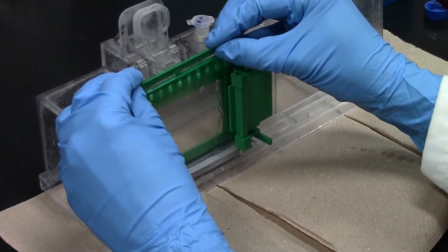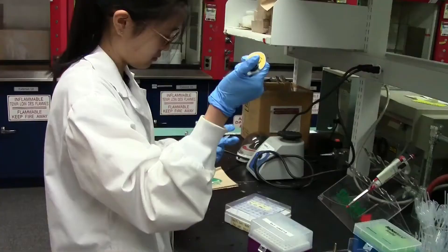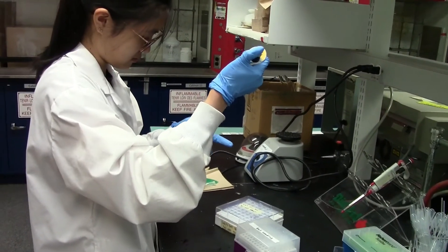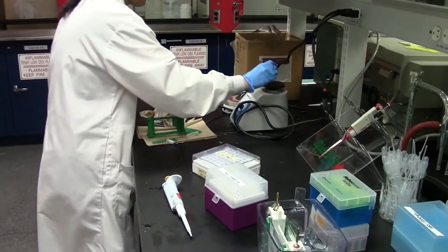While waiting for the gel to polymerize, you can prepare your oligonucleotide samples. 0.1 ODs are ideal for a small gel. Add 10 microliters of formamide to the dry samples and mix by vortexing.